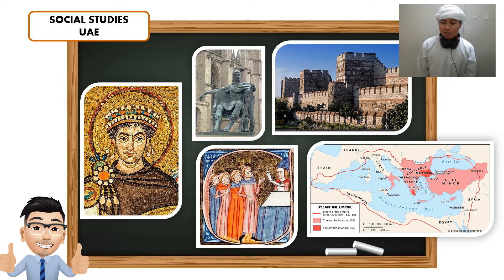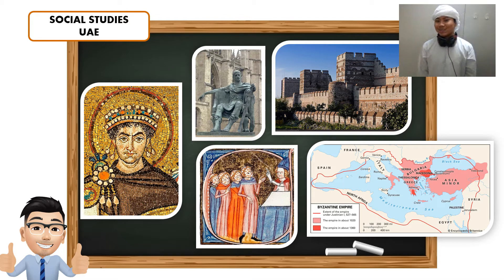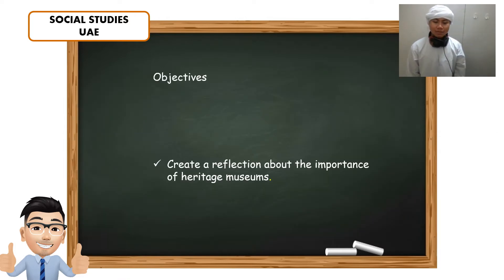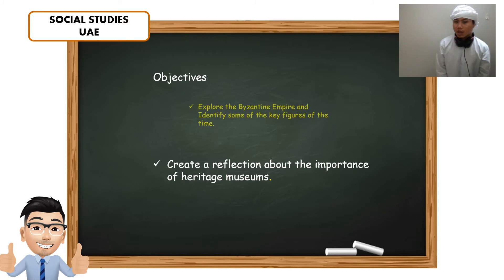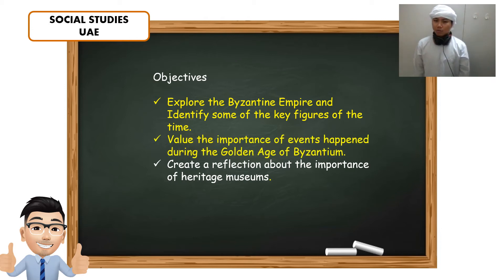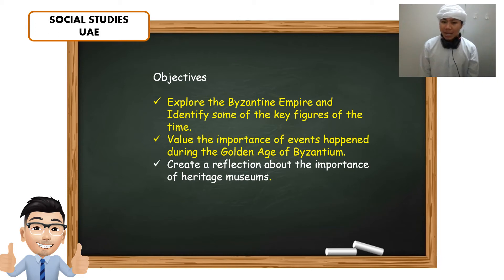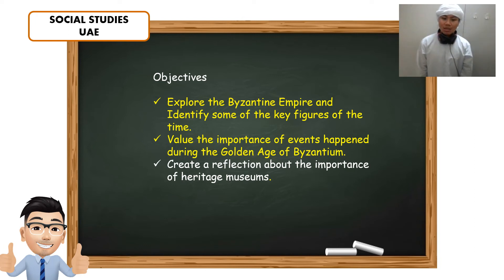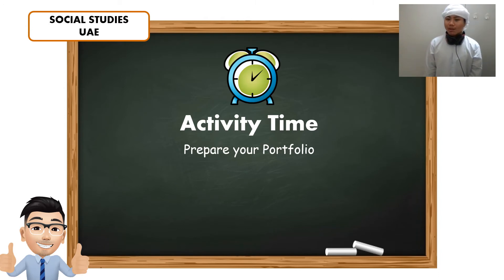For this activity, I want you to prepare your portfolios. Let's have a recap for our objectives. Yesterday, we were able to talk about the Byzantine Empire and identify some of the key figures of the time. Also, we were able to value the importance of events that happened during the Golden Age of Byzantium. And for today, we're going to create a reflection about the importance of heritage museums. Prepare your portfolios.